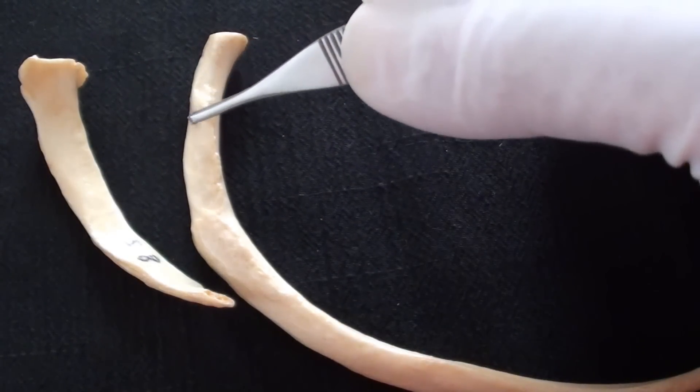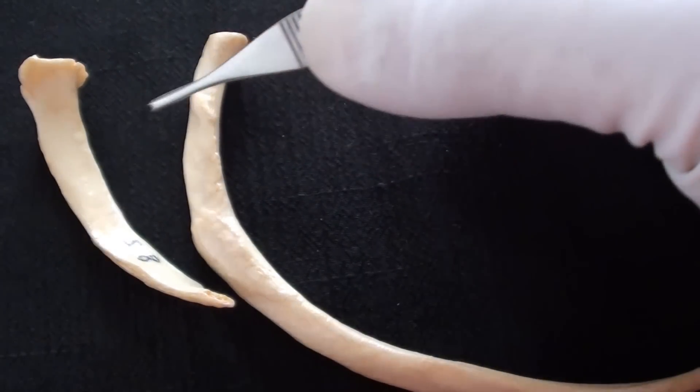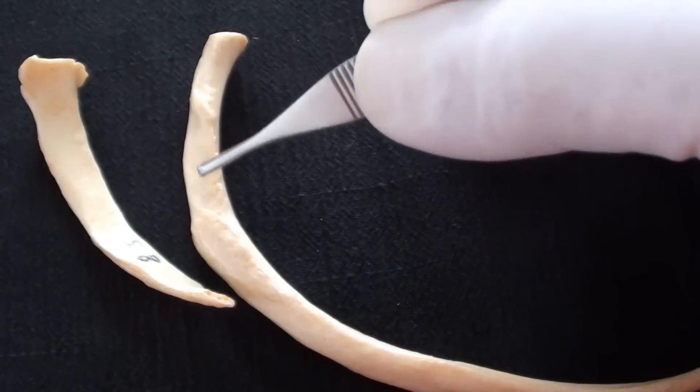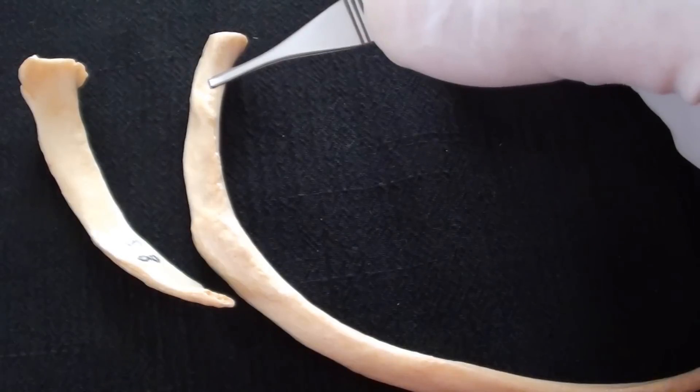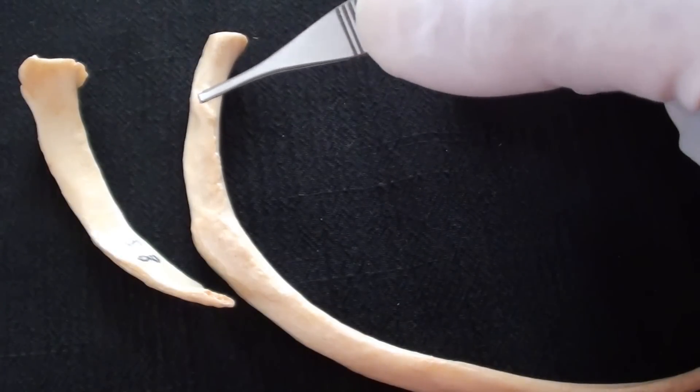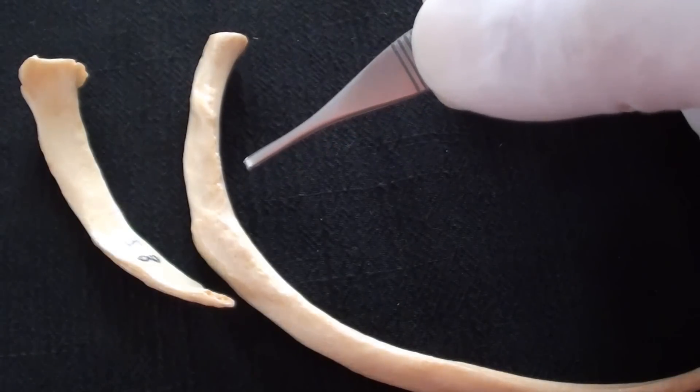You would notice that there is no tubercle on rib 11 or rib 12. They are curved along the different radius and of course they should not be able to reach and establish the contact with the transverse processes of thoracic vertebrae 11 and 12.